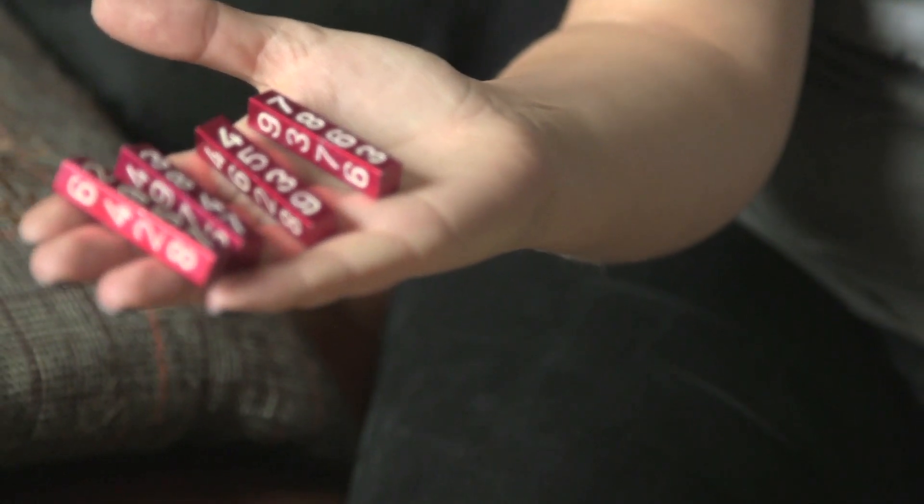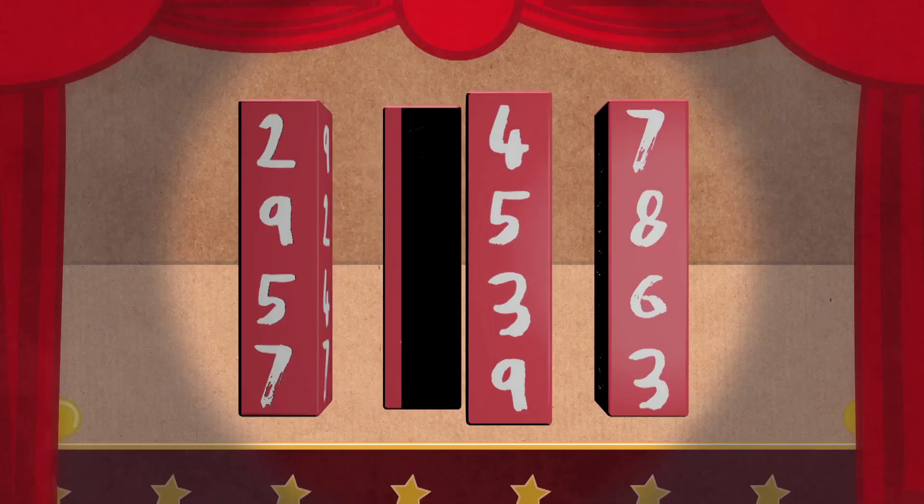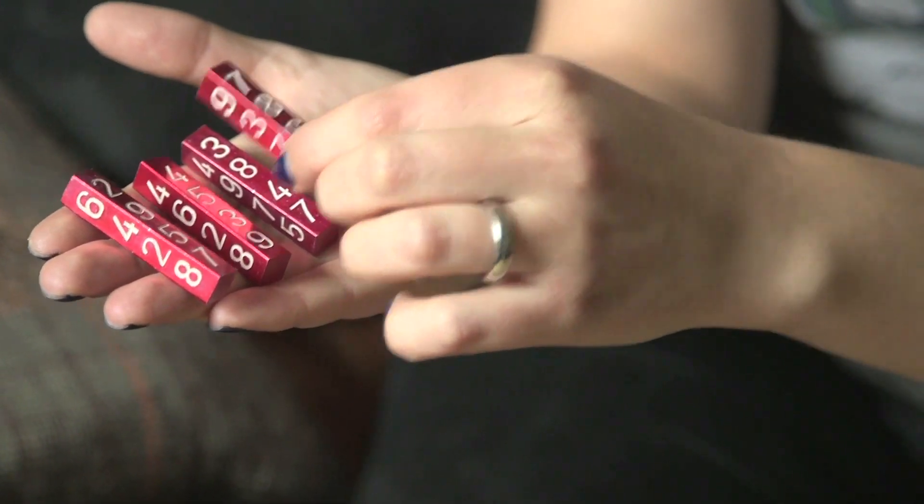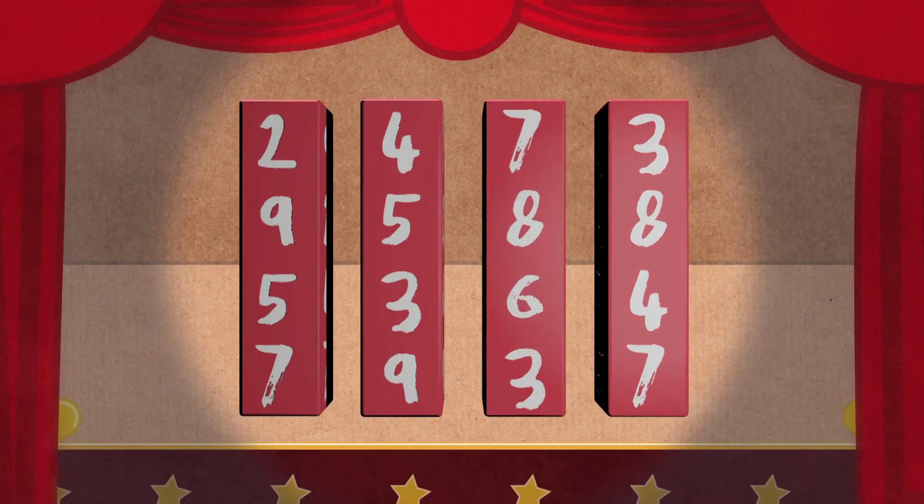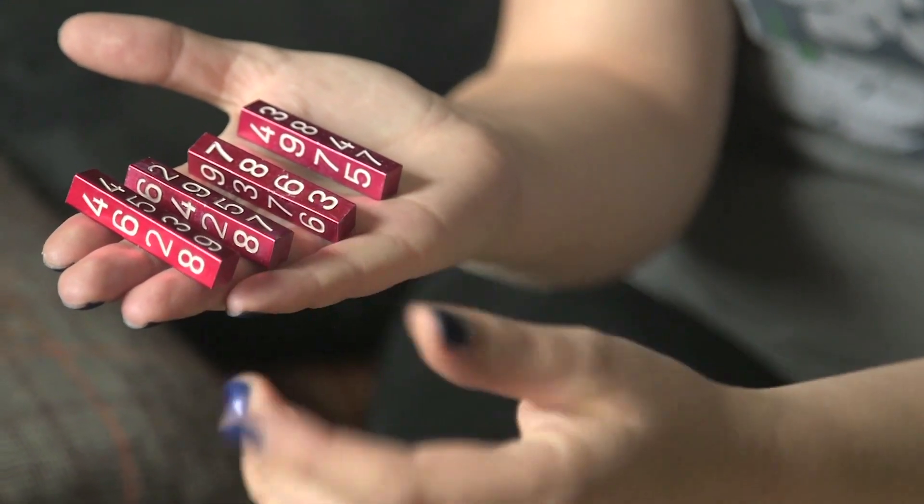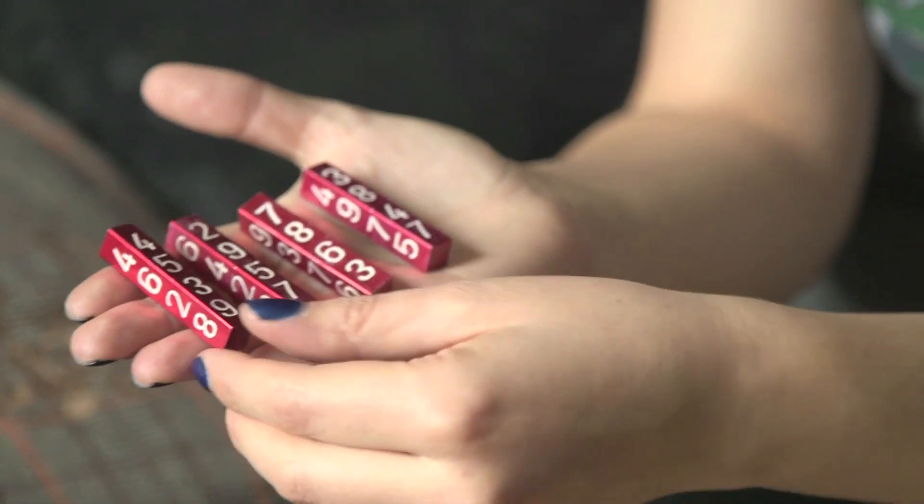So you're allowed to order these in whatever order you want. Let's swap the middle two and then the end two. And this end? Both the ends. Both end twos. Okay, that one and that one. So they've got four faces on each one, so what do you want to do?